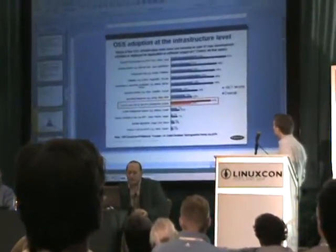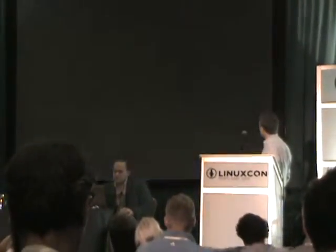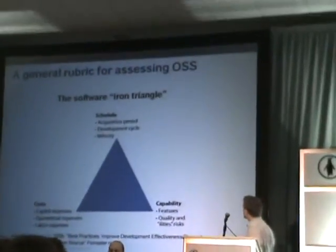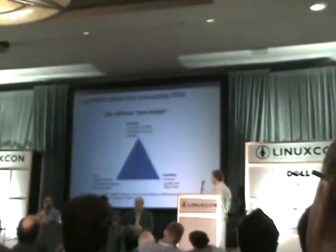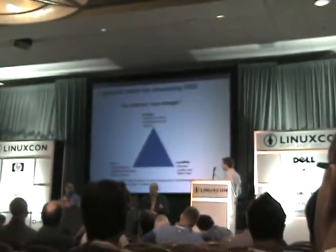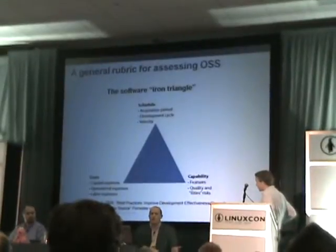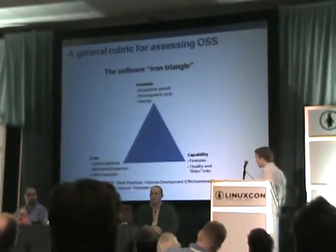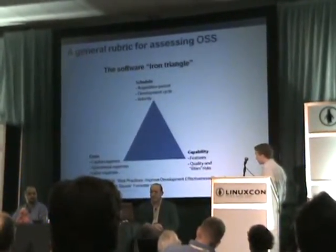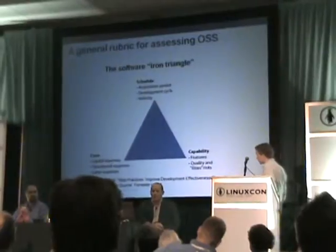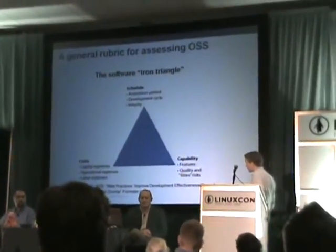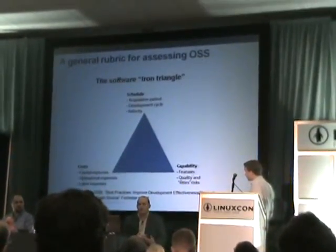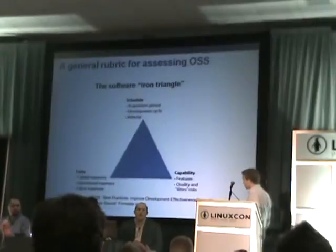What I do is I use the iron triangle. Anybody who's ever written code knows this. You've got cost, you've got scheduling, you've got capability — pick two. And then you have to vary the third. And when we look at open source, I talk to them about that iron triangle and what they're trying to accomplish.